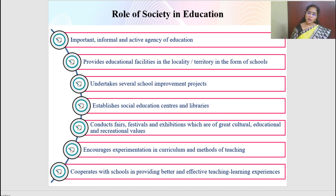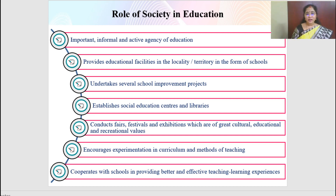Let us focus on the role of society in education. There are three agencies of education: formal agency, informal agency and non-formal agency. Formal agencies are schools which have a standard timetable, standard syllabus and examinations. Informal agencies are family, religion and society. Non-formal agencies are distance education, correspondence courses, etc. Society is very important because it serves as an informal active agency for education.